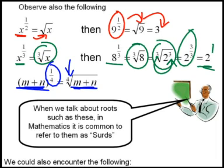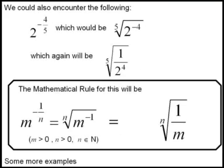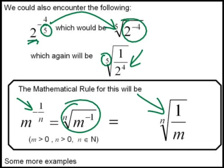When we talk about these roots in mathematics, we often refer to them as surds. We could also encounter negative rational exponents, such as 2 to the power of minus 4 over 5. This means taking 5 to the outside of the root sign, with 2 to the power of minus 4 inside. A negative exponent becomes a fraction, so it's 1 over 2 to the power of 4, and we are finding the fifth root of this fraction. The constraints remain: m must be greater than 0, n must be greater than 0 and a natural number, so also greater than or equal to 2.